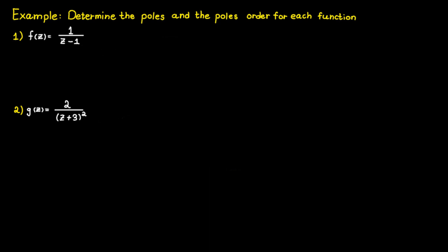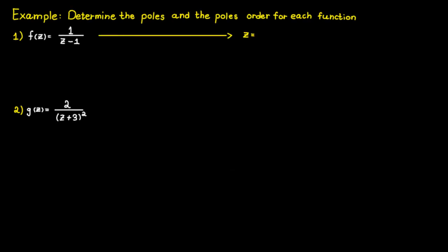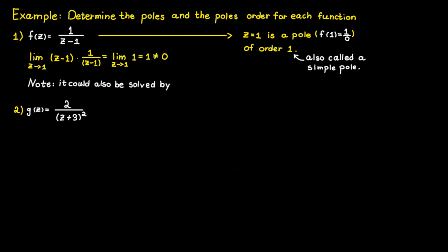What we are really trying to do here is look for places where we are dividing by zero, which you are not allowed to do in mathematics — so don't try this at home! In the first example, C equals 1 is a pole since this makes the function divide by zero. The order of this pole is 1, since the limit of C minus 1 times the function is not equal to zero. A pole of order 1 is also called a simple pole. We could also solve this by noting that C equals 1 is a zero of order 1 for 1 over f, and therefore a pole of the same order for f.